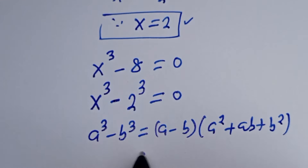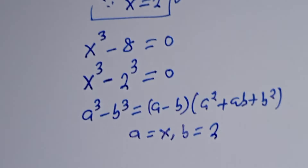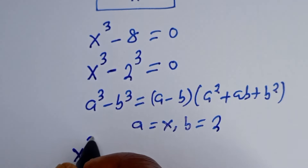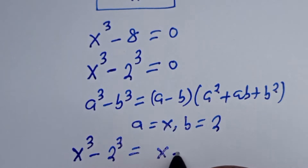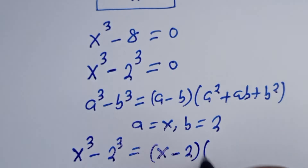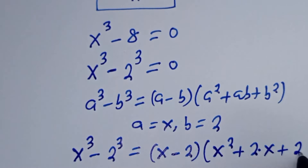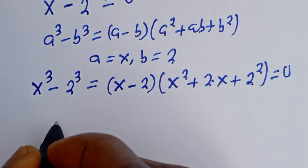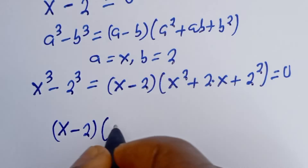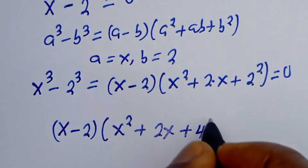And from this equation, a is equal to s, b is equal to 2. Then s to the power of 3 minus 2 to the power of 3 is equal to s minus 2, bracket, s squared plus 2 multiplied by s plus 2 squared, that is 4, is equal to zero.